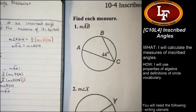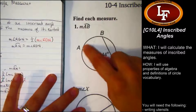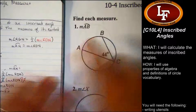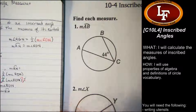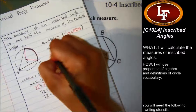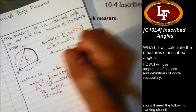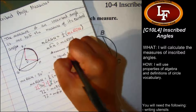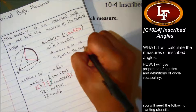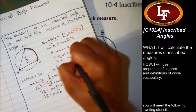Looking at number 1, you're being asked to find the measure of arc AB — that means this arc right here. Remember that the measure of the arc is going to be the same as the measure of the central angle. We should add that to our notes: the measure of an arc is equal to the central angle that creates it.